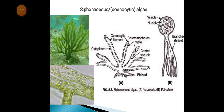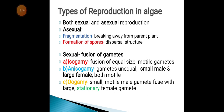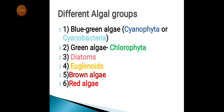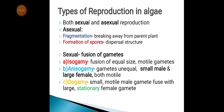Now for the types of reproduction in algae — I'll cover the different algae groups in a video I'll post. Reproduction can be sexual or asexual. Asexually, algae can reproduce by fragmentation — a piece breaks away from the parent plant and forms a new organism — or by formation of spores, which are small light substances that can be carried by wind and distributed.